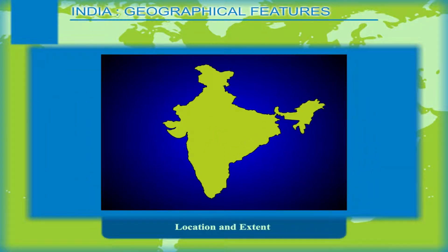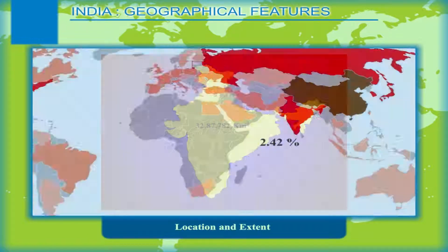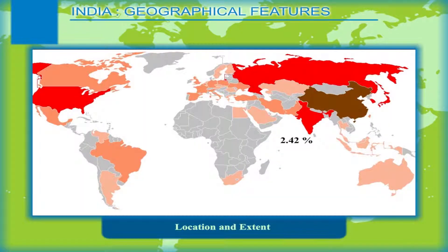The total area of India, which is 32,87,782 square kilometers, is about 2.42 percent of the total geographic area of the world.